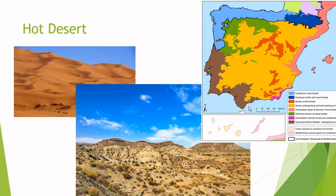The hot desert is extremely dry — it hardly ever rains — and it's usually very hot during the day and very cold during the night. In Spain we do have deserts: the Almería region, shown in pink on the map, would be desert.